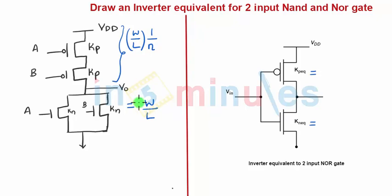When it's in parallel, it will give me W by L into a term where it gets multiplied by N. We have seen all this in the previous clips where N is the number of transistors. What can we say? This is nothing but PMOS circuit...